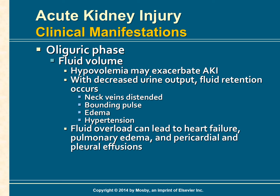Hypovolemia has the potential to exacerbate all forms of AKI. Reversal of hypovolemia with fluid replacement is often sufficient to treat many forms of AKI, especially those with pre-renal causes such as dehydration. When urine output decreases, fluid retention occurs. In the case of reduced urine output — anuria and oliguria — the neck veins may become distended with a bounding pulse, edema, and hypertension. Fluid overload can eventually lead to heart failure, pulmonary edema, and pericardial and pleural effusions.